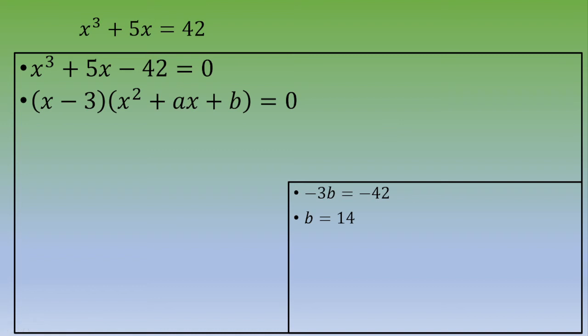So now let's see the value of a. We focus on the term with x. Negative 3ax plus bx equals 5x. That means negative 3a plus 14 equals 5.